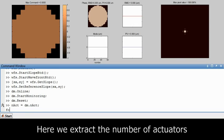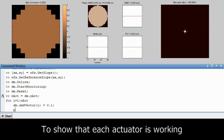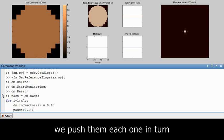Here we extract the number of actuators of the deformable mirror in order to actuate them one by one. In order to verify that all the actuators are functioning correctly we actuate each one in turn.